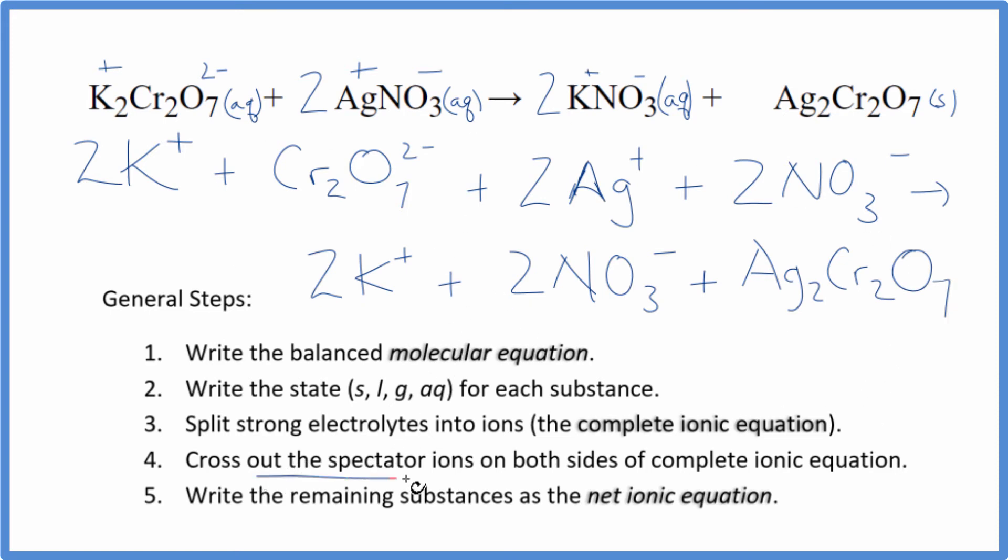Now we can cross out these spectator ions. They're on both sides. So when I look at the reactants here, I have two potassium ions. And then the products, two potassium ions. Those are spectator ions. I have two nitrates here in the reactants and two nitrates in the products. Get rid of those spectator ions. What's left, that's the net ionic equation for K2Cr2O7 plus AgNO3.